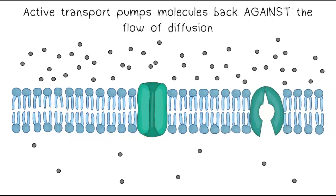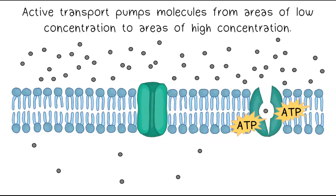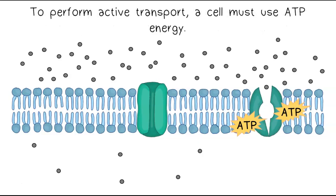Active transport pumps molecules back against the flow of diffusion. Active transport pumps molecules from areas of low concentration to areas of high concentration. To perform active transport, a cell must use ATP energy.